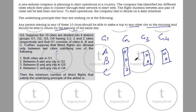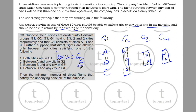Between two cities in G1: 3 choices times 2 equals 6 flights. Between A and any city in G2: 3 forward flights and 3 return flights, so 6. Between B and any city in G3: 2 forward and 2 return, so 4. Similarly between C and any city in G4: 2 forward, 2 return, so 4. Overall: 6 plus 6 is 12, plus 4 is 16, plus 4 is 20 flights in the morning. We double this, so 40 flights overall are required to satisfy this criteria.